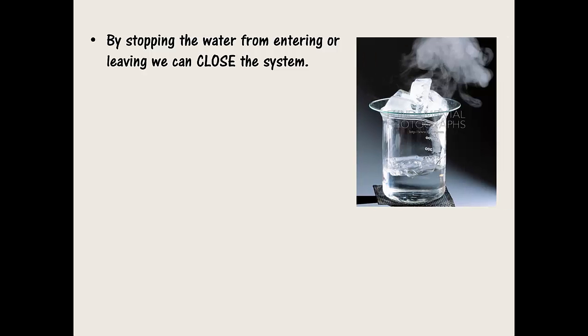Next, we'll stop the water from entering or leaving. This is called making the system closed. This is easiest to show by using a beaker of boiling water with a lid on. Evaporation and condensation are still occurring inside the beaker, but because the system is closed, in other words, no reactants or products can leave or enter, these processes are now occurring at the same rate. This is not a steady state now, but an example of dynamic equilibrium.